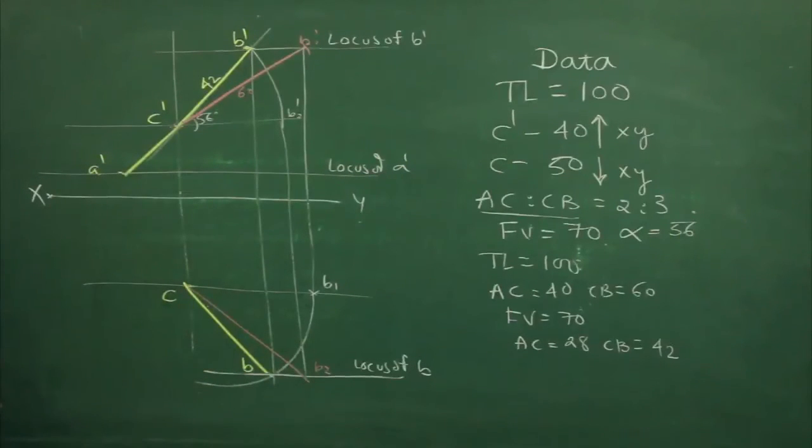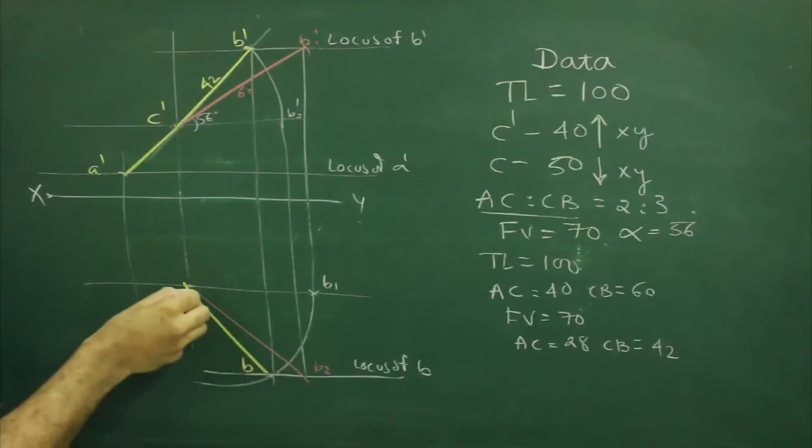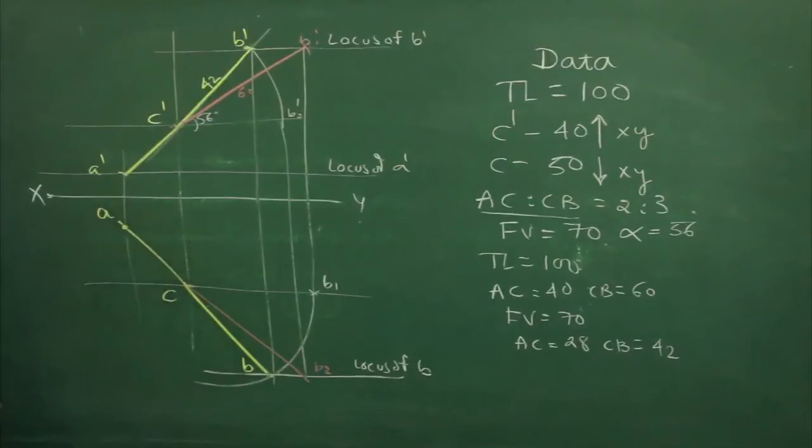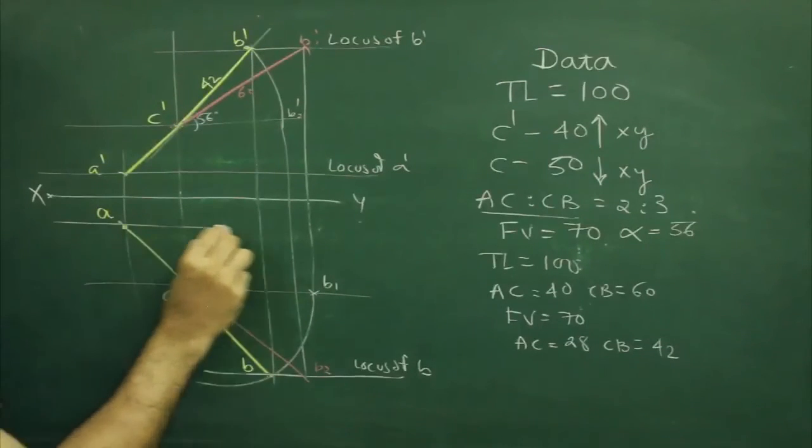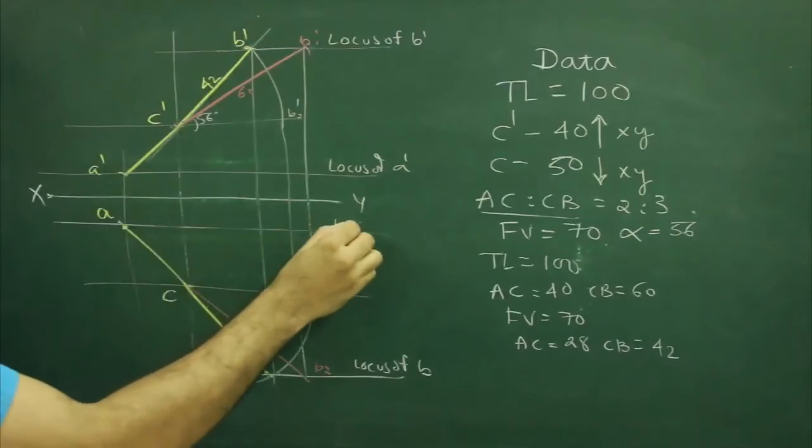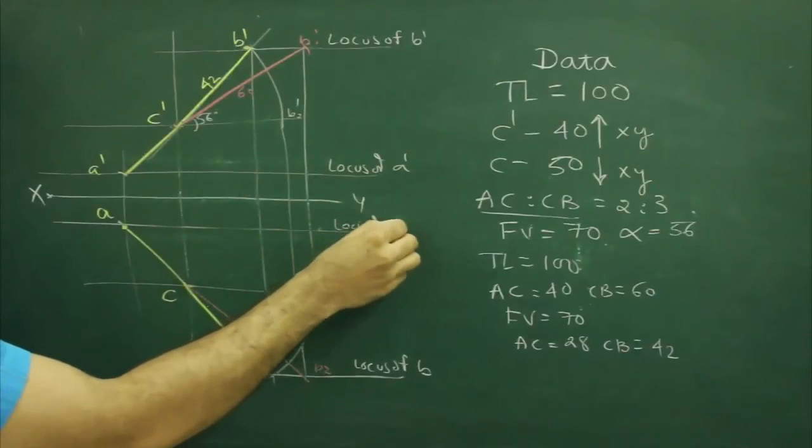We will project this line A dash straight down and from here we will extend B, C and extend, so we will get point A also. So we will get locus of A.